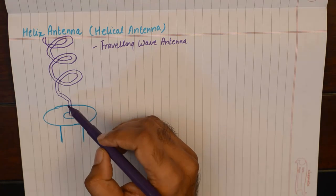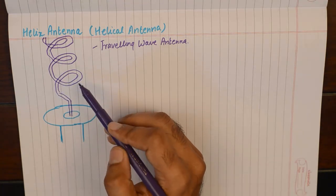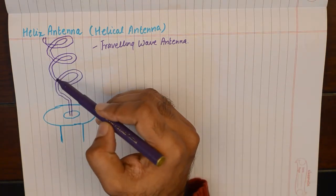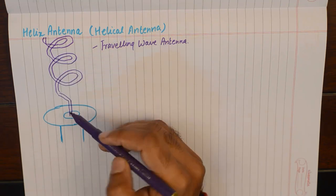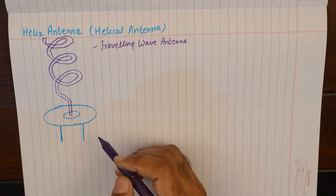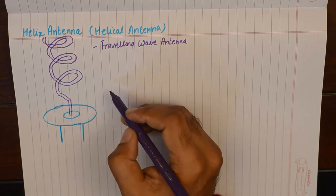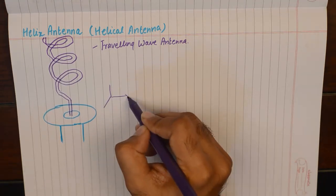They have this wire kind of arrangement in a helix fashion which is mounted over a ground plane. If we take the coordinate systems, rectangular coordinate system...